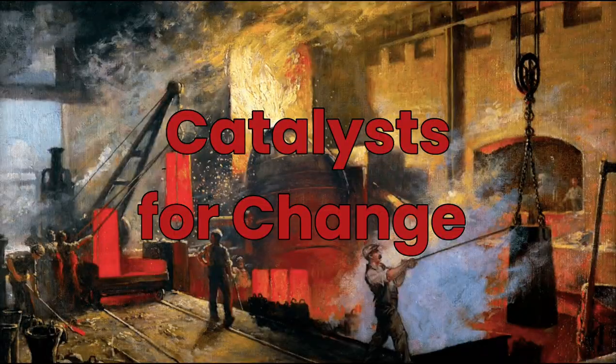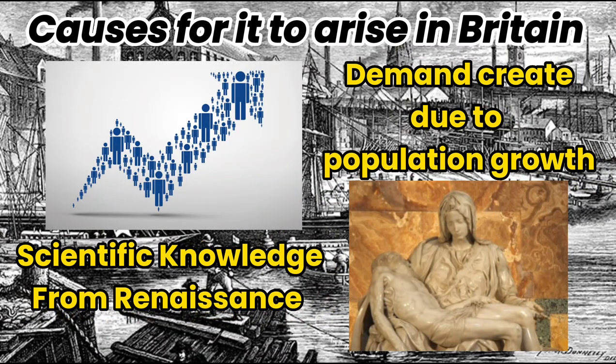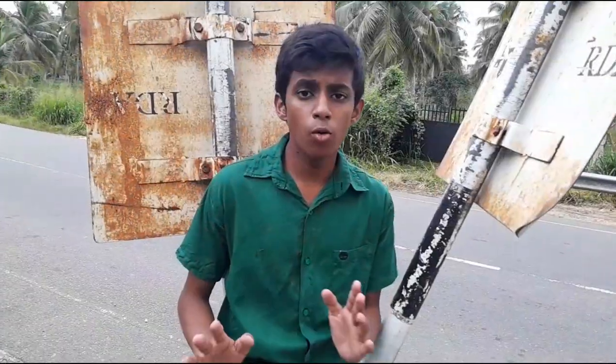Picture this: in the latter part of the 18th century in Britain, when manual labor was the norm, the world was about to witness a colossal shift that unfolded over six decades, revolutionizing industries, technology, and in fact the whole world. This period is known as the Industrial Revolution. But why Britain? Trade played a real role — with a booming economy and a growing wealthy class, Britain had resources to invest in industries. Rapid population growth created demand for goods, and scientific knowledge from the Renaissance era fueled technological developments.